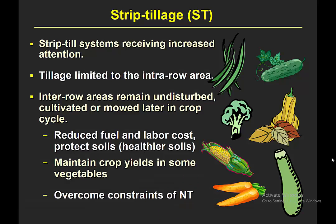Strip-till is a hybrid approach — you only till a small strip where you're going to plant that vegetable crop, and the rest of the land is left undisturbed, just like a no-till condition. Tillage is limited to that in-row area. Research has found benefits similar to no-till, including reduced fuel and labor costs. Importantly, yields in strip-till are similar to or sometimes better than conventional till. This has been seen with beans, cucumber, summer squash, winter squash, broccoli, and sweet corn. Small-seeded vegetables also do well in strip-till because you're tilling where you plant the crop.